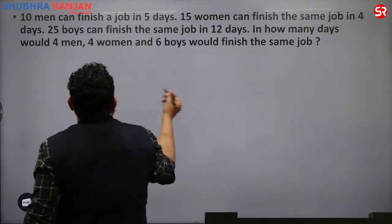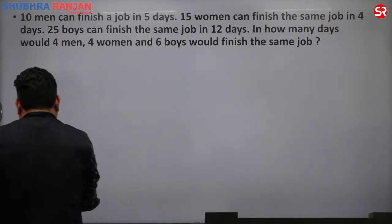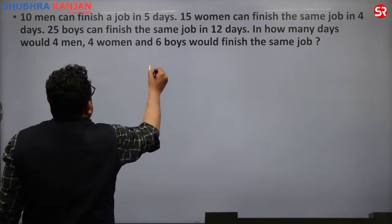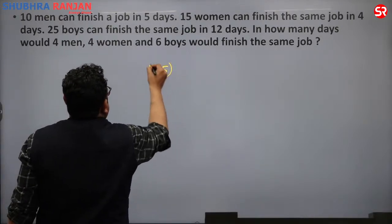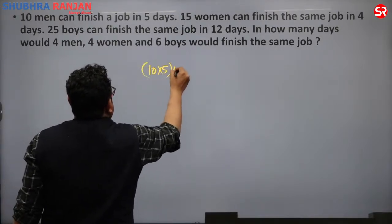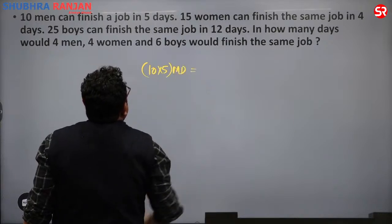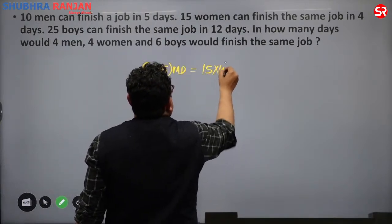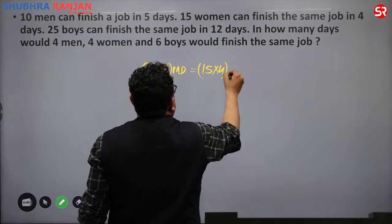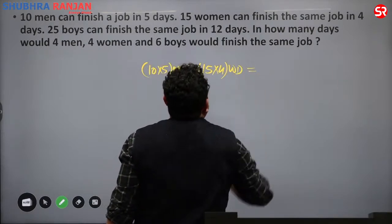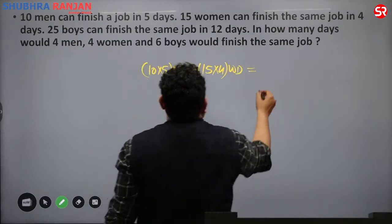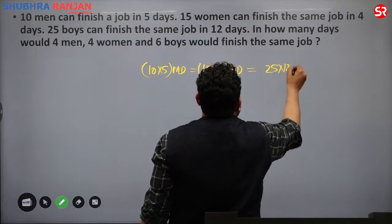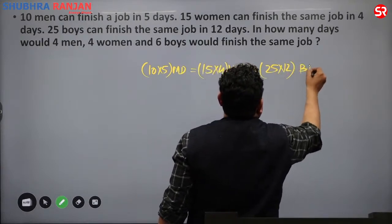Total work: 10 men in 5 days gives 10 × 5 equals 50 man days. 15 women in 4 days gives 15 × 4 equals 60 women days. 25 boys in 12 days gives 25 × 12 equals 300 boy days. So 50 man days equals 60 women days equals 300 boy days.